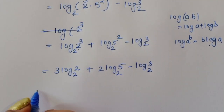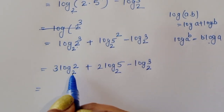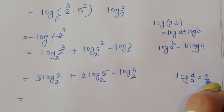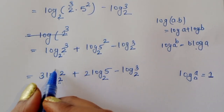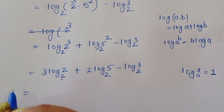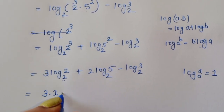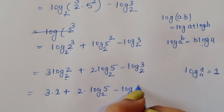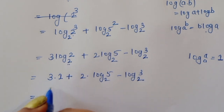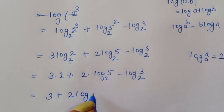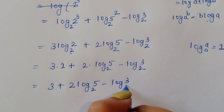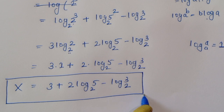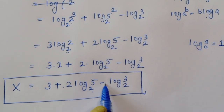Now, using the formula log_a(a) equals 1, we have log₂(2) equals 1. So 3 times 1 gives 3. Therefore, x equals 3 plus 2·log₂(5) minus log₂(3). This is the final answer: x equals 3 plus 2·log₂(5) minus log₂(3).